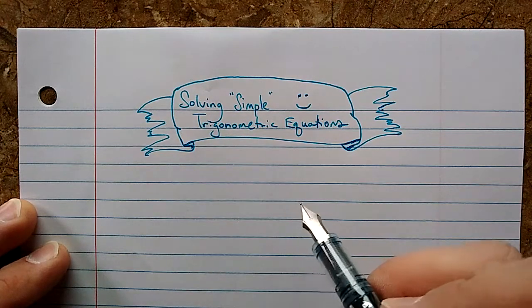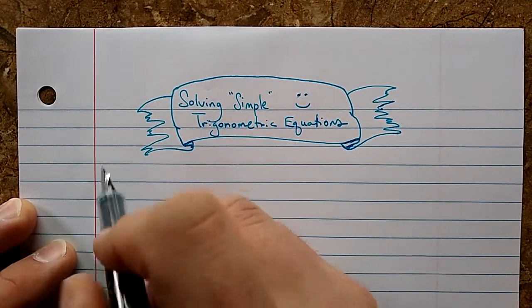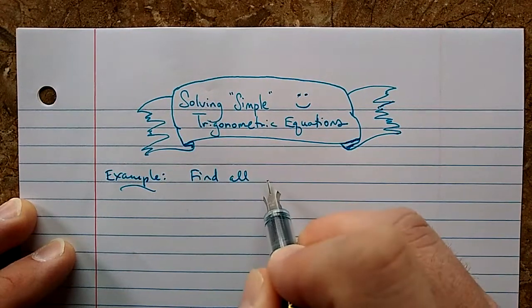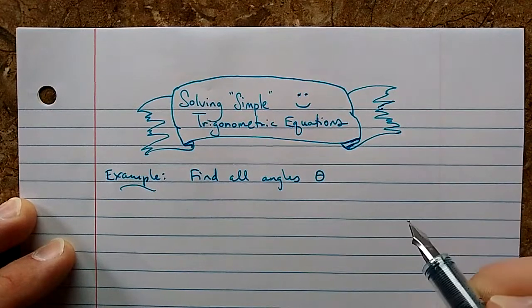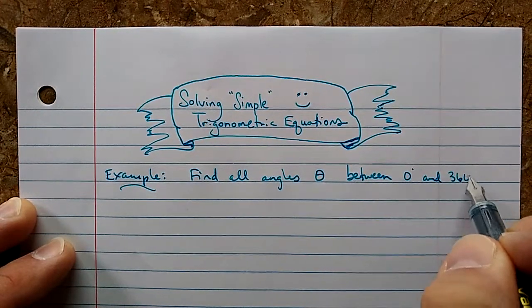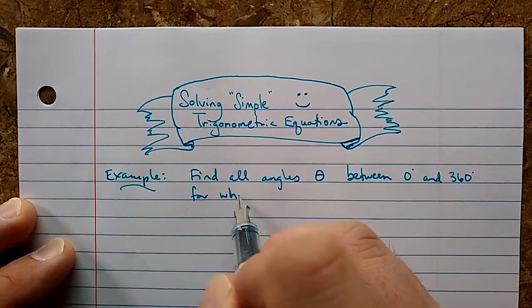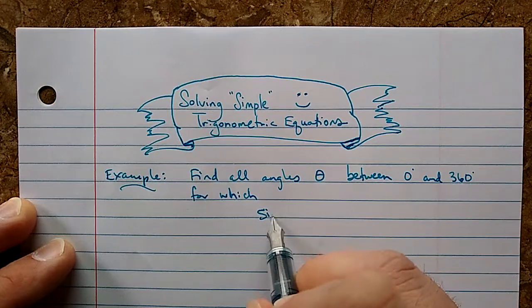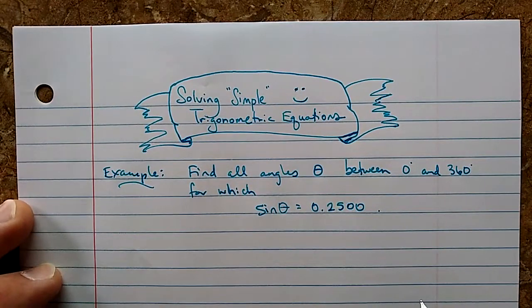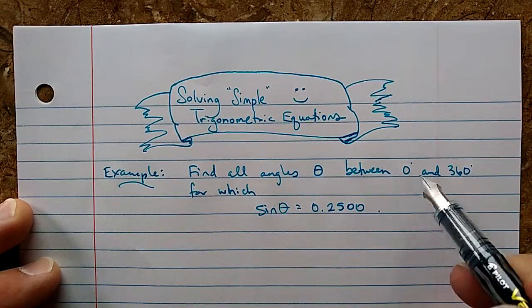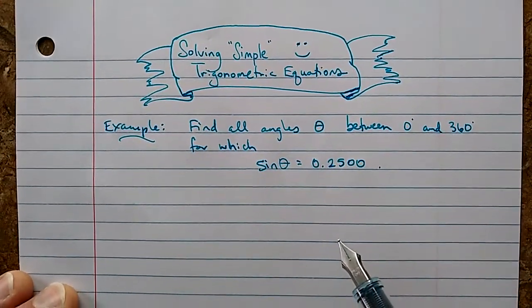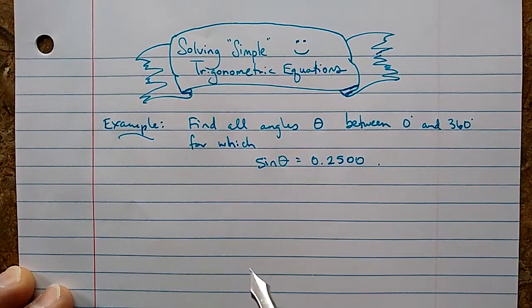I'm going to write down an example of a question and then I'm going to give you the strategy that we'll follow. So here is our example: Find all angles theta between 0 degrees and 360 degrees for which this is true: sine of theta equals 0.2500. Another way this could be worded is solve this equation for theta between 0 and 360.